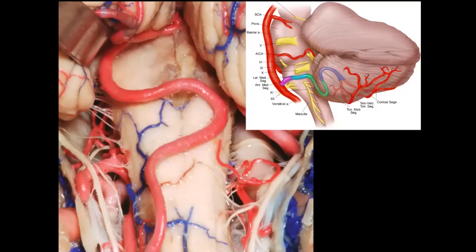This portion is called the tonsil medullary segment, because it runs between the medulla and the cerebellar tonsils. It comes down, forms this caudal loop — 'caudal' because it's going in the direction of the cauda — then turns around and comes back up underneath the cerebellar hemisphere.